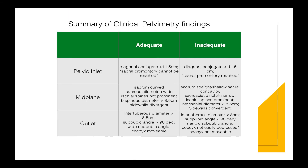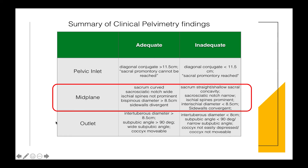The clinical pelvimetry findings for the mid plane can be summarized as follows. If the mid plane is adequate, report it as: sacrum curved, sacrosciatica notch wide, ischial spines not prominent, bispinous diameter more than 8.5 centimeters, and pelvic side walls divergent. If the mid plane is inadequate, report it as: sacrum straight or shallow sacral concavity, sacrosciatica notch narrow, ischial spines prominent, inter-ischial diameter less than 8.5 centimeters, and side walls convergent.